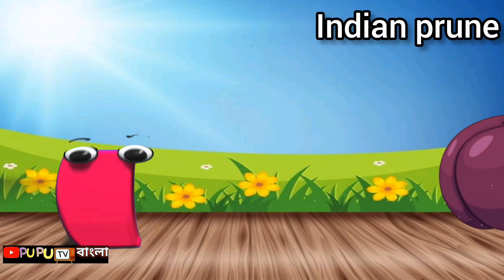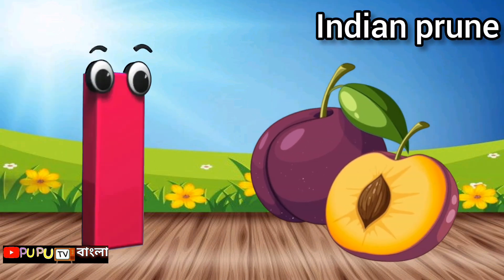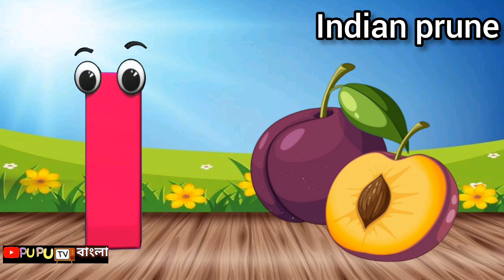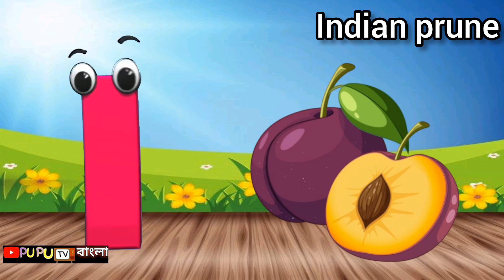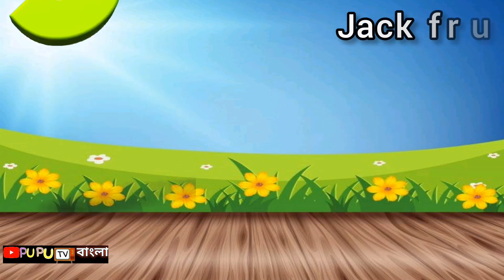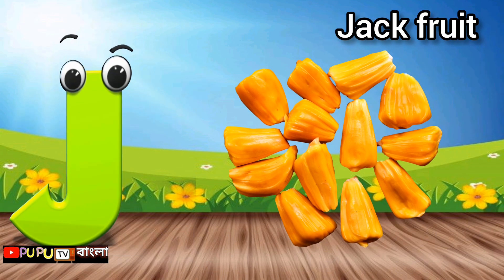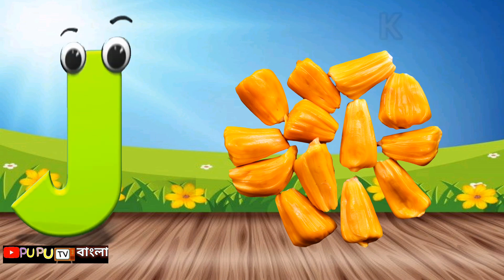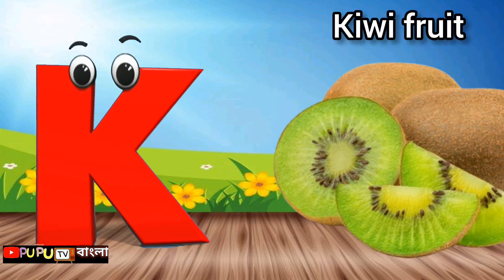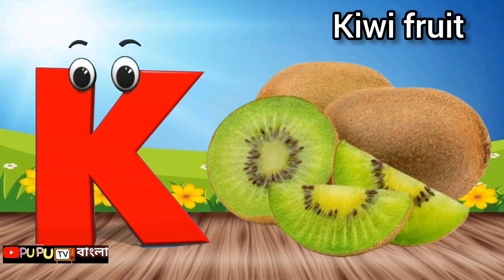I is for Indian Prune, I-I-Indian Prune. J is for Jackfruit, J-J-Jackfruit. K is for Kiwifruit, K-K-Kiwifruit.